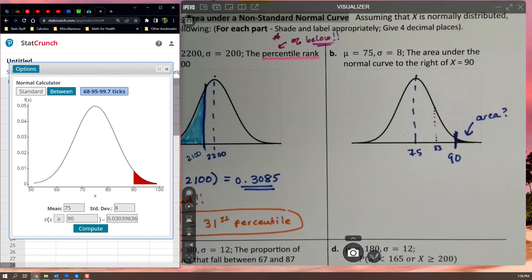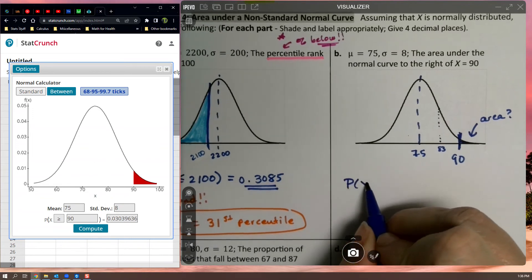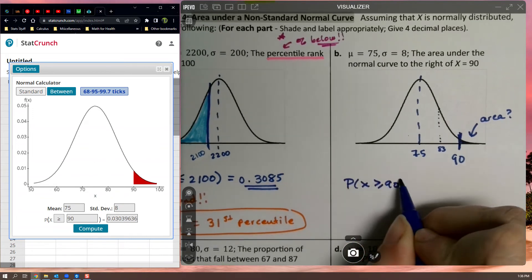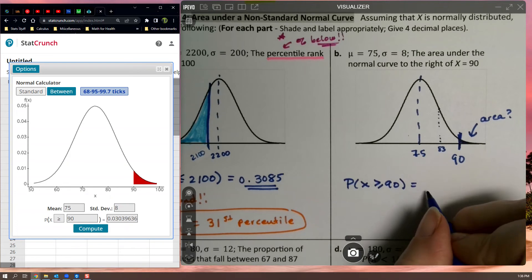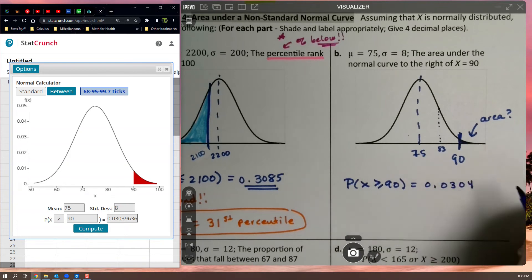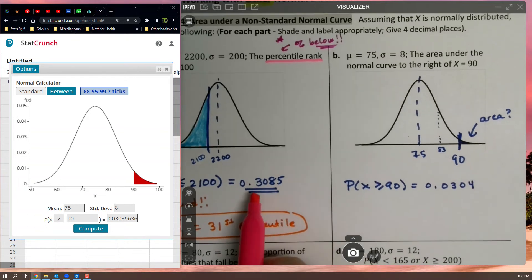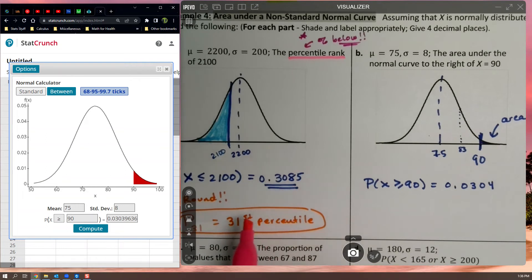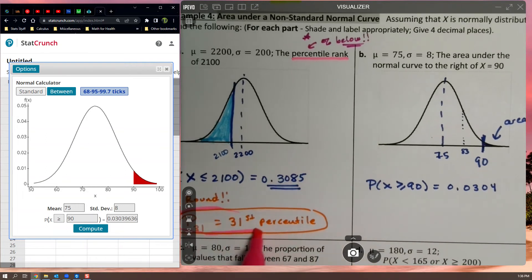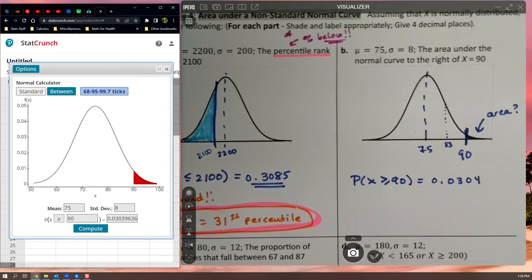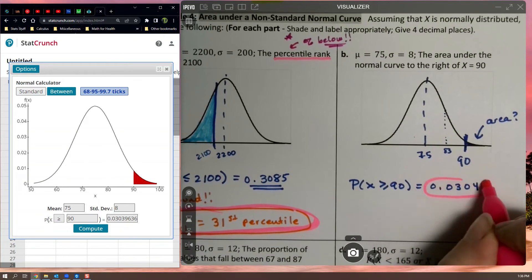And again, that picture matches just like we think it should. So the probability that x is greater than or equal to 90 equals 0.0304. And there we have it. Now that one's the answer. I didn't circle it over here because it wasn't technically the answer. The answer is actually this bit down here when we do the percentiles. But for this one, this is the answer.